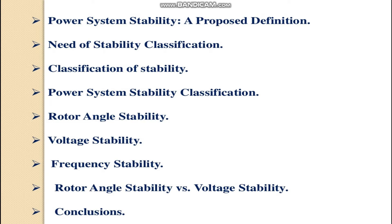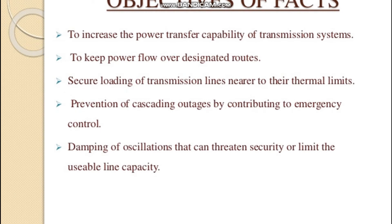What are the problems encountered in present AC transmission systems? To overcome those problems, we are going for FACTS devices. The main purpose of FACTS devices is to increase the power transfer capability and to keep power flow over designated routes in the grid. In terms of the system, active and reactive power and line reactance play an important role. Day by day power demand is increasing; if demand is greater than generation, problems occur.